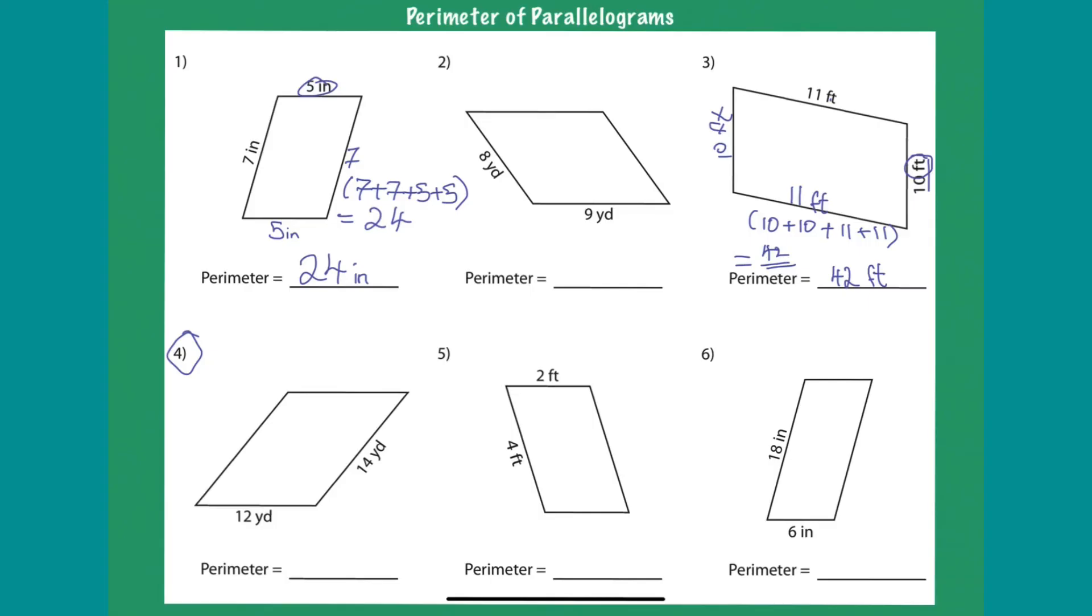All right, so let's try and do this. If this side is fourteen, then this side is fourteen. Okay, fourteen yards. And then if this side is twelve, then this side is also twelve. So you have twelve yards. So when you add it together, all you have to do is fourteen plus fourteen plus twelve plus twelve.